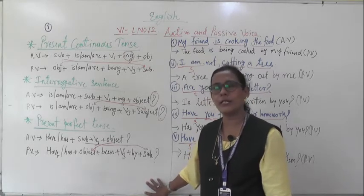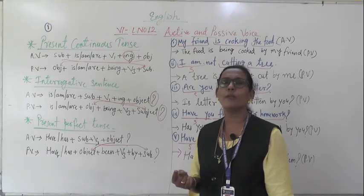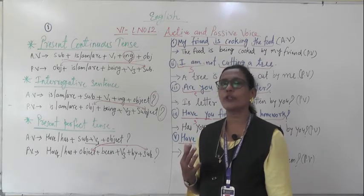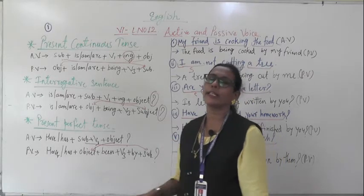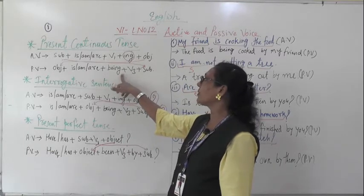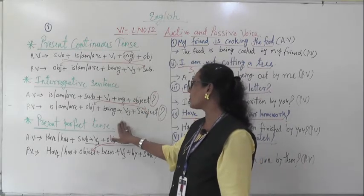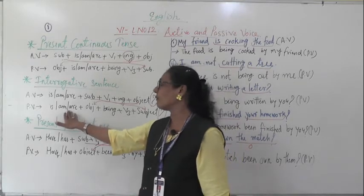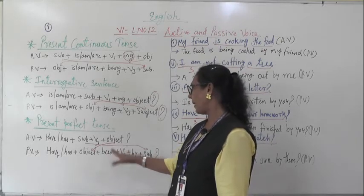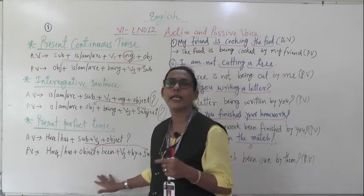It will take a little time, dear children. As you practice and revise these examples, you will find it very easy. First time it may seem difficult, but with revision it becomes easy. Whenever ING is there, we attach 'being' in the passive voice. In the interrogative, the helping verb comes first. In perfect tense, active voice also uses V3 form, and passive voice uses 'been.'